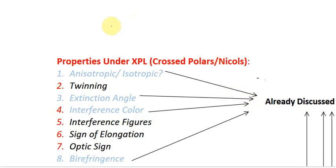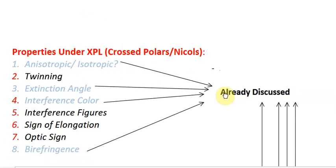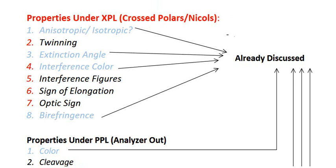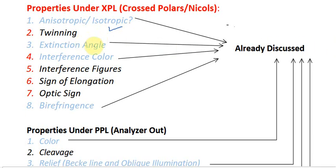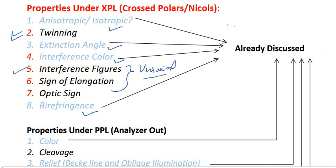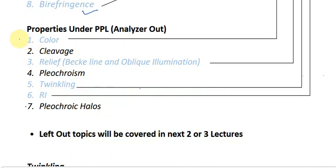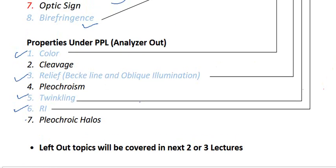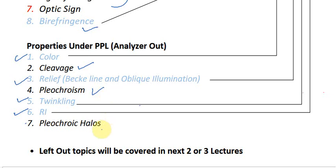Let me take a brief view of the topics I have already covered. I discussed isotropic and anisotropic minerals and how to identify them using the petrological microscope. Then we discussed extinction types, interference colors, birefringence, and for PPL we discussed color, relief, back-alignment and optic illumination methods, twinkling, and refractive index measurement.